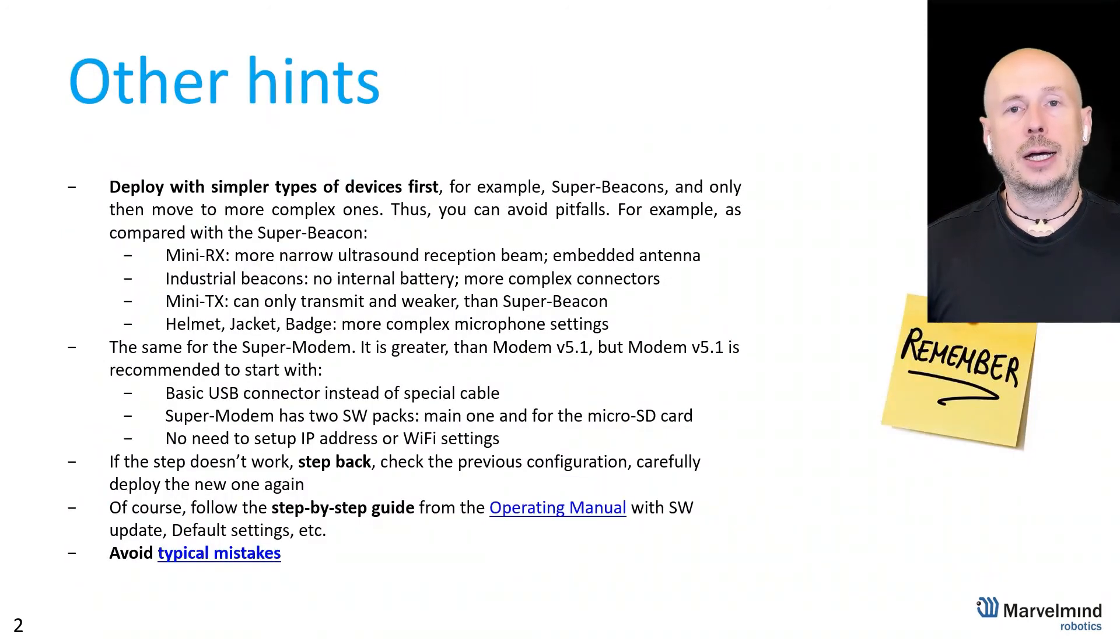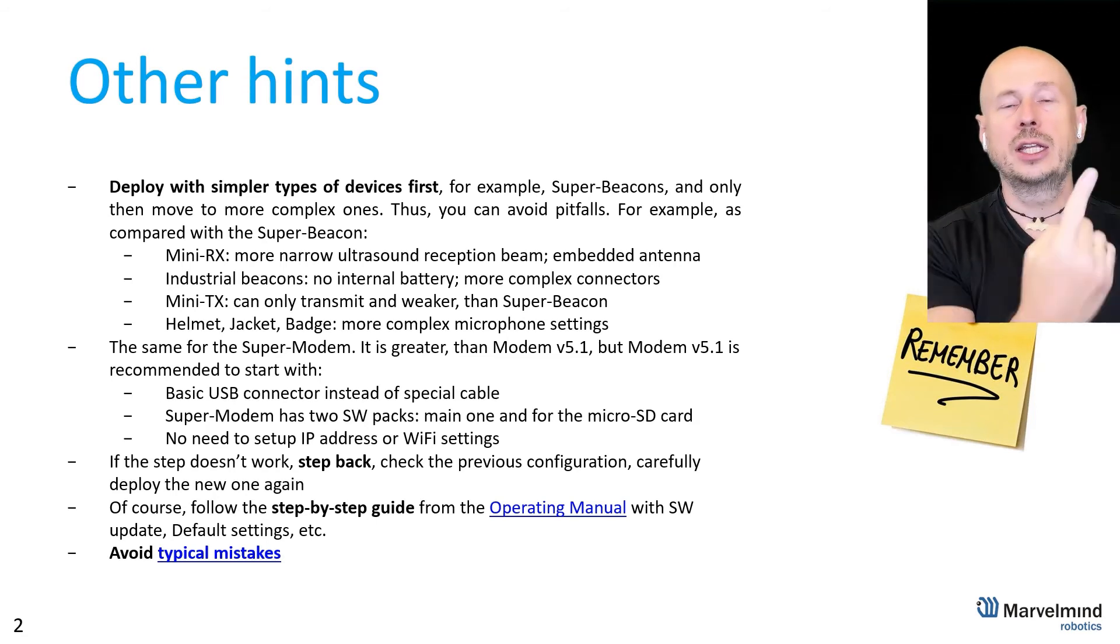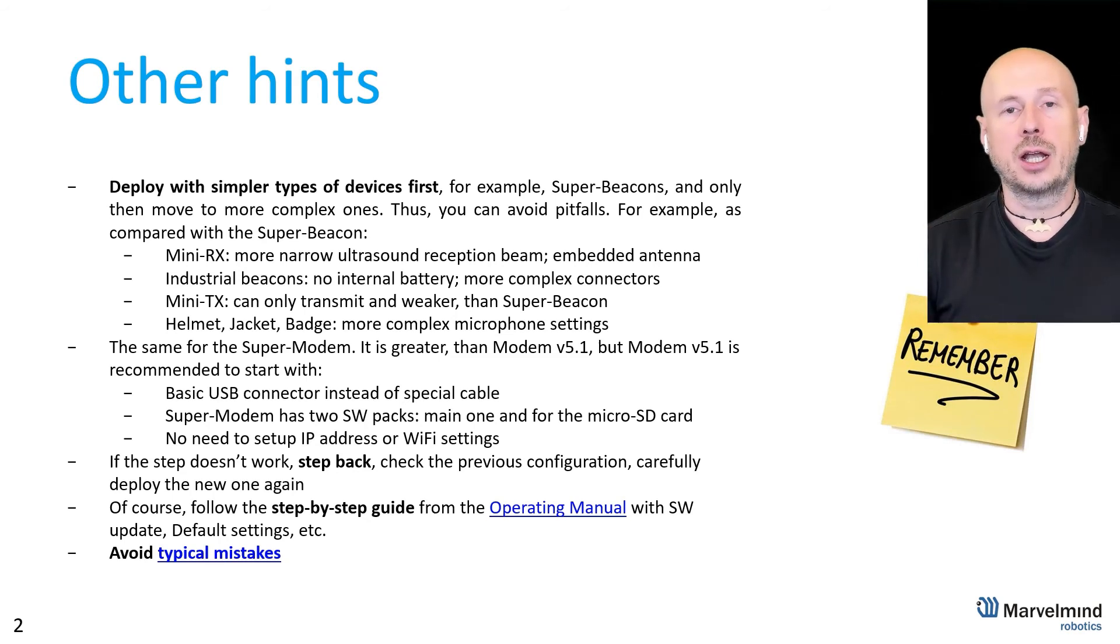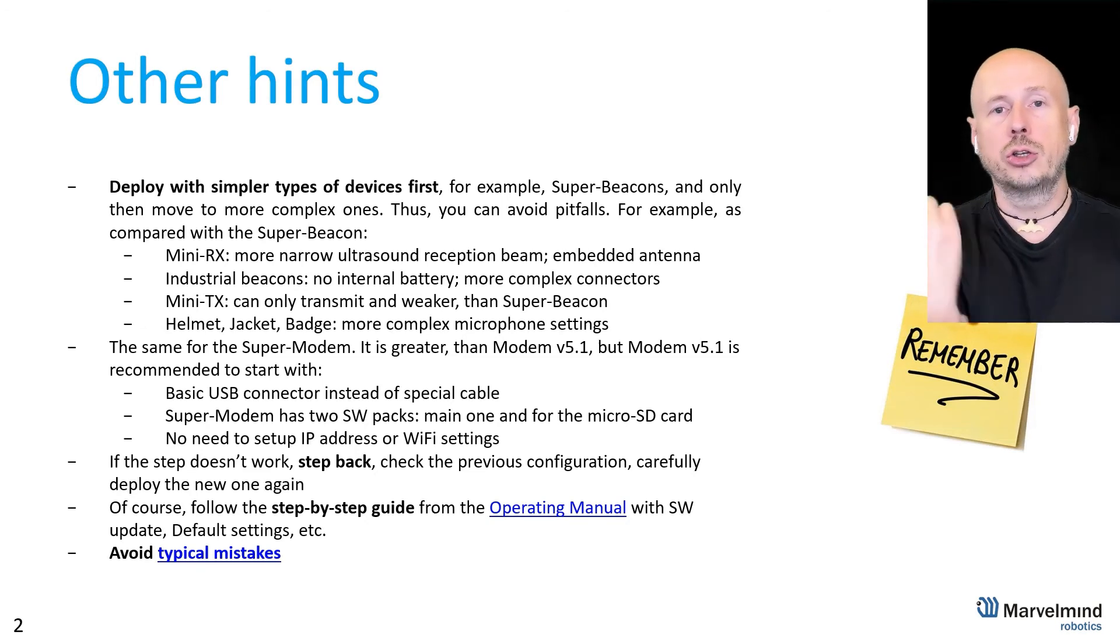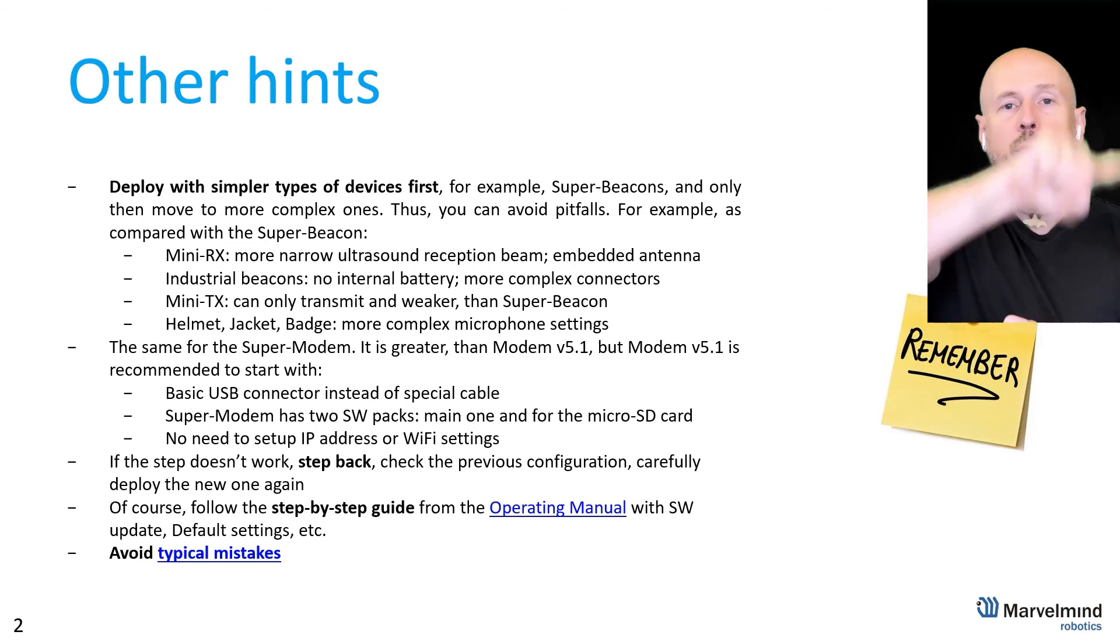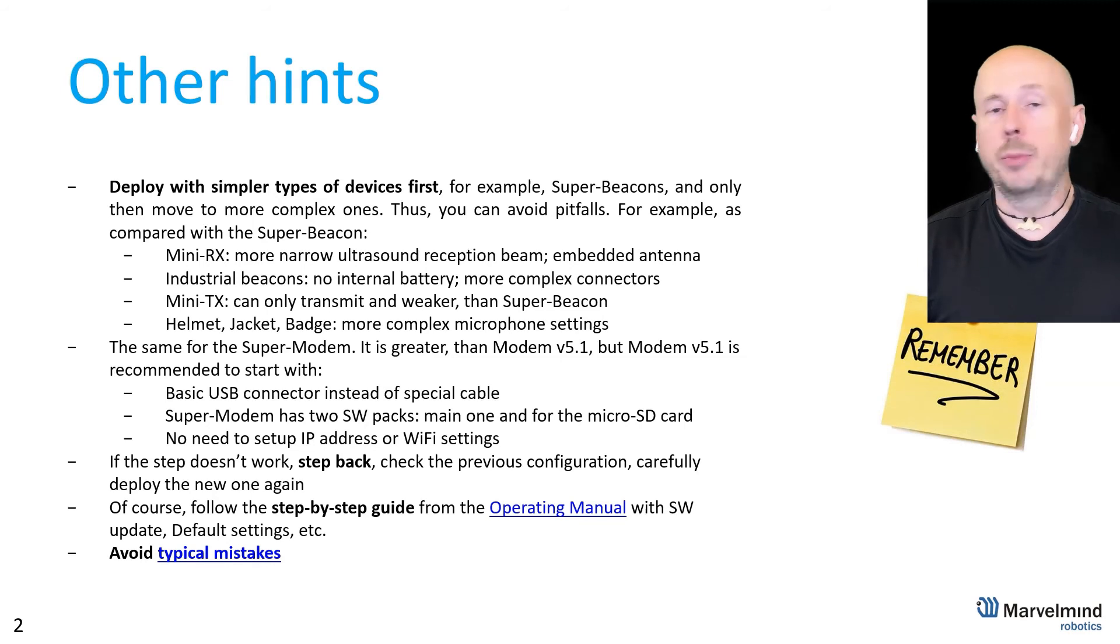Then other recommendations, why do we recommend super beacons to start with? Because super beacons are the simplest. Let's compare with other beacons. For example, mini RX. Super beacon has a hemisphere so 360 degrees reception diagram in reception and transmission by the way diagram in horizontal if the beacon is looking upward and 180 degrees vertically.